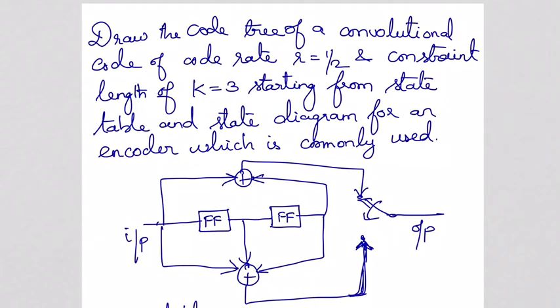Dear students, good afternoon. I'm going to explain this problem: Draw the code tree of a convolutional code of code rate 1 by 2, constraint length k equal to 3, starting from the state table and state diagram for an encoder which is commonly used. This question was asked in the previous year university question paper.